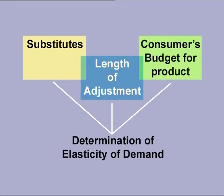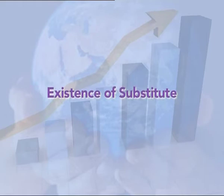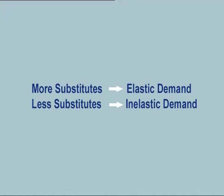Determinants of Elasticity of Demand — those factors which affect the elasticity of a product. The three main determinants are: existence of substitutes, length of time allowed for adjustment, and share of the product in a consumer's budget. Existence of Substitutes: the number of substitutes and their closeness affects the elasticity of demand. Larger and closer the substitutes available, more is the elasticity of demand, and vice versa. If the price of a product having good substitutes rises, the consumer will reduce its consumption and shift to substitutes, causing demand for the original product to fall. Reverse reaction happens if the product has no or fewer close substitutes.